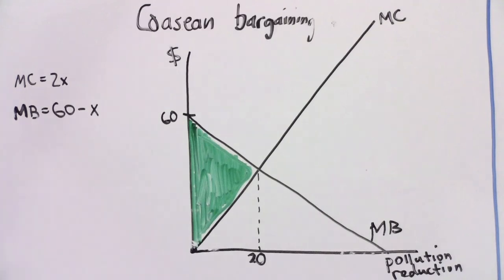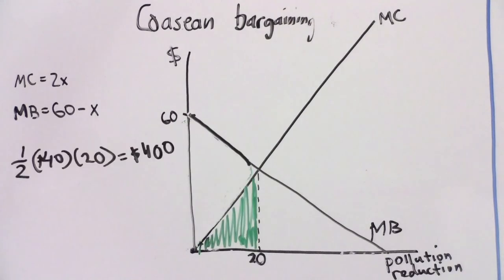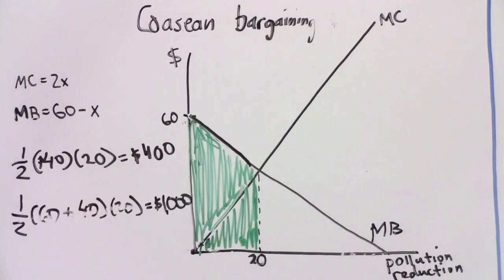Another clever solution was offered 50 years ago by an economist named Ronald Coase. Coase showed that bargaining between individuals can lead to efficient levels of pollution reduction, if property rights are well enforced and if transaction costs are absent. In our example, assume that your neighbor has the right to pollute all he wants, but that you can pay him to reduce how much he pollutes. You two could make a deal, because reducing pollution by 20 pounds benefits you more than it costs your neighbor. Your neighbor would be willing to reduce pollution if you pay him more than it costs him — the cost to him is illustrated by this green triangle, equal to $400. You would be willing to pay much more than $400, since the benefit to you is illustrated by this large green trapezoid, equal to $1,000.